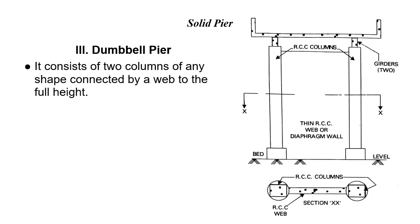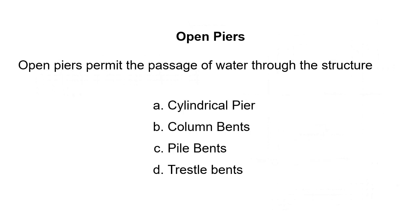The Dumbbell Pier has columns connected — 2 or 4 columns — and the open pier types include Cylindrical, Column Bends, Pile Bends, and Trestle Bends.